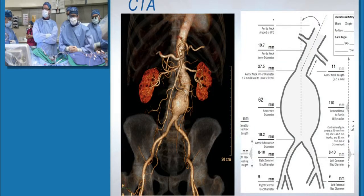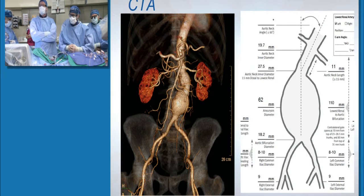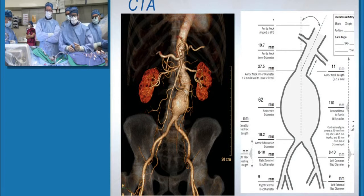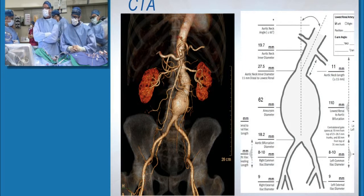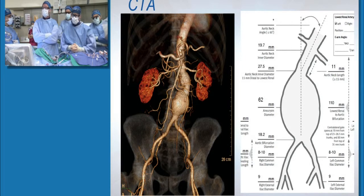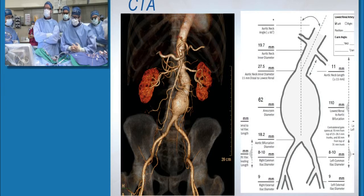Here's a 3D reformat image from his CTA. You can see he has an infrarenal abdominal aortic aneurysm which has a bilobed configuration. The more superior component is about 3 centimeters. The more inferior component is 6.2 centimeters. It extends just proximal to the bifurcation, sparing the common iliac arteries. The preplanning sheet is listed there.